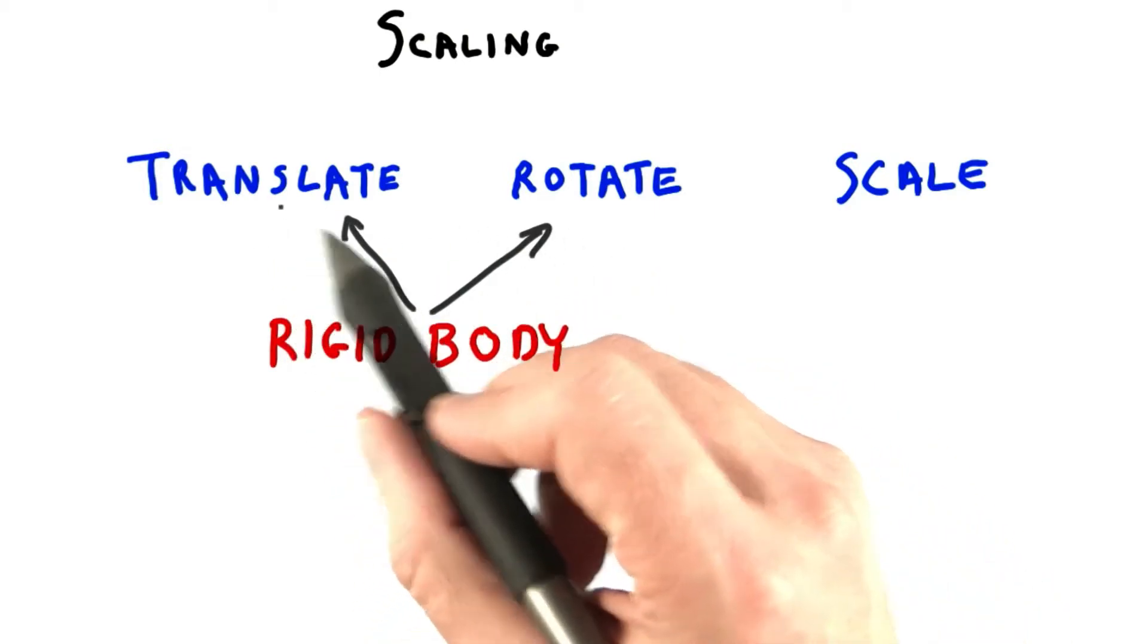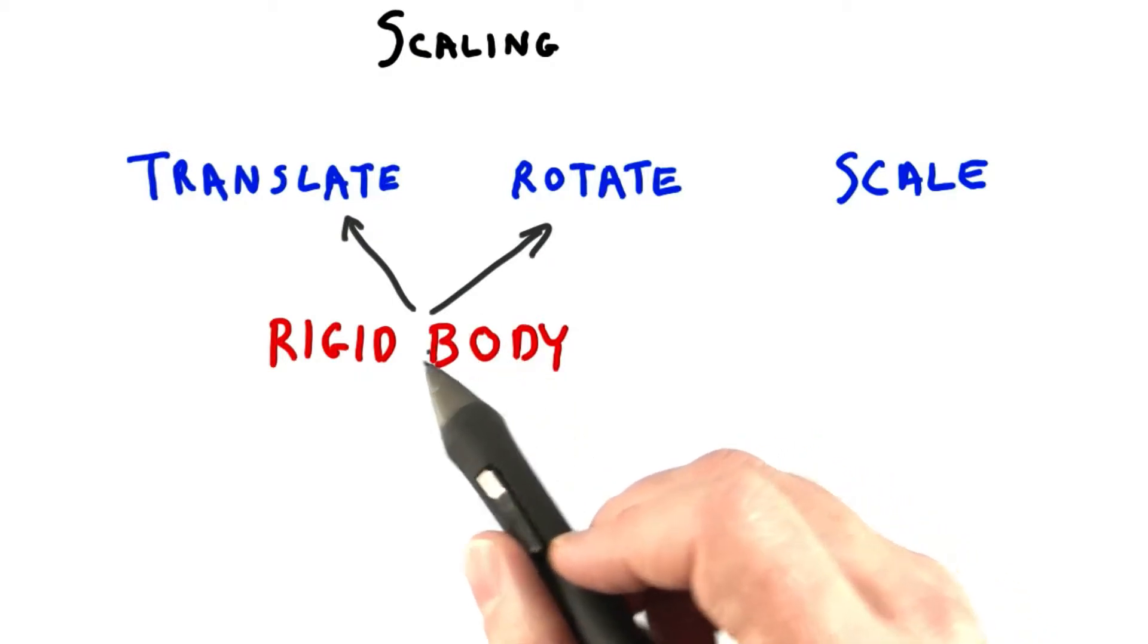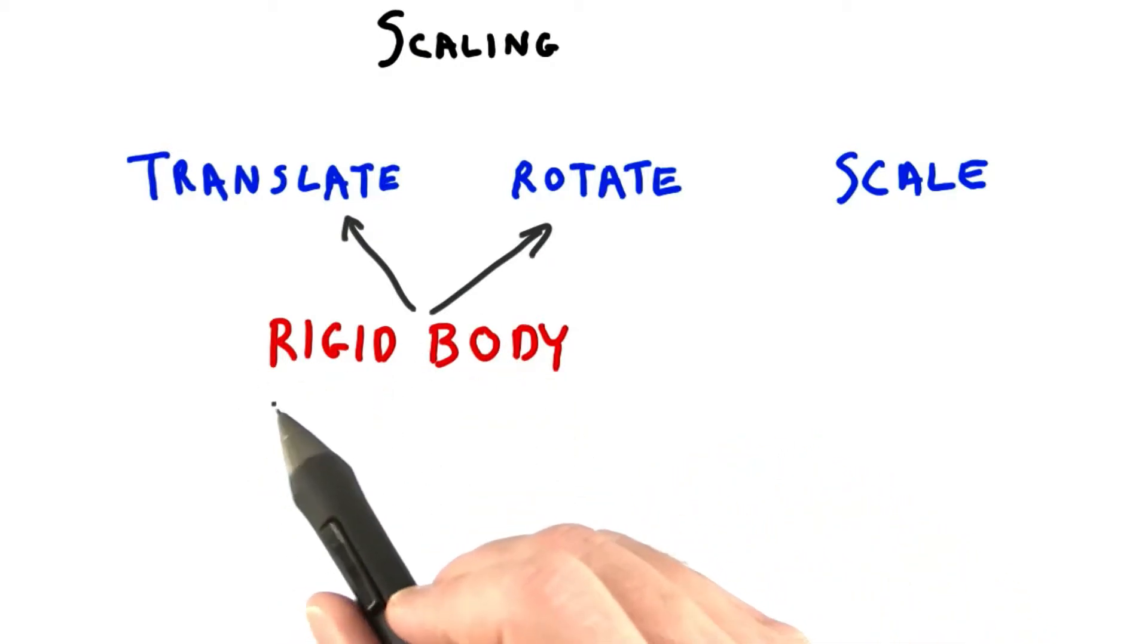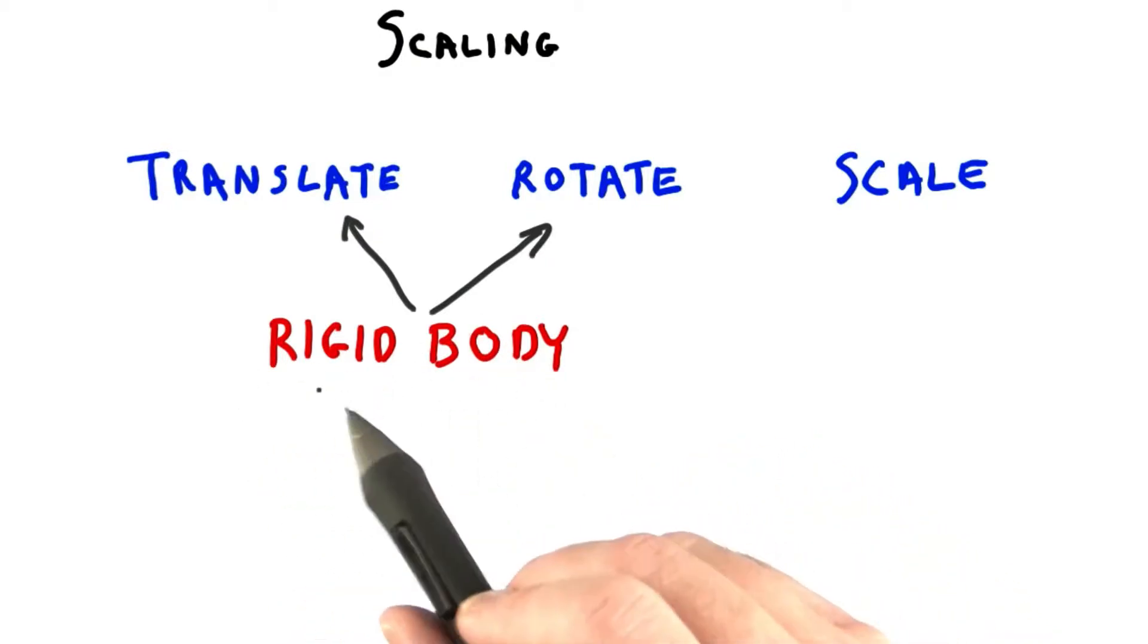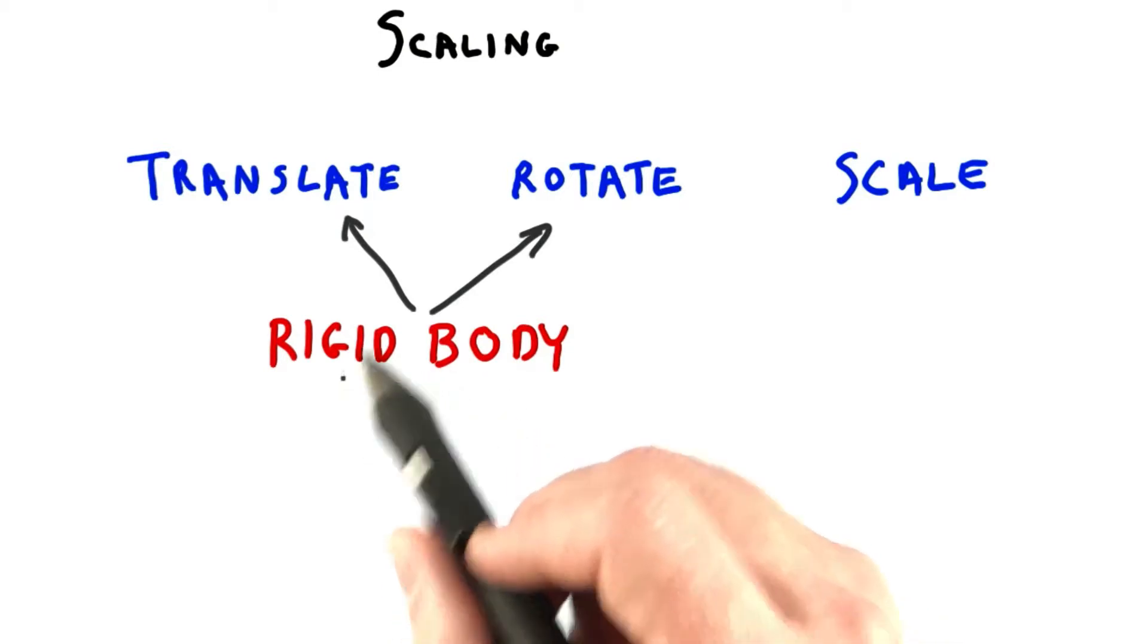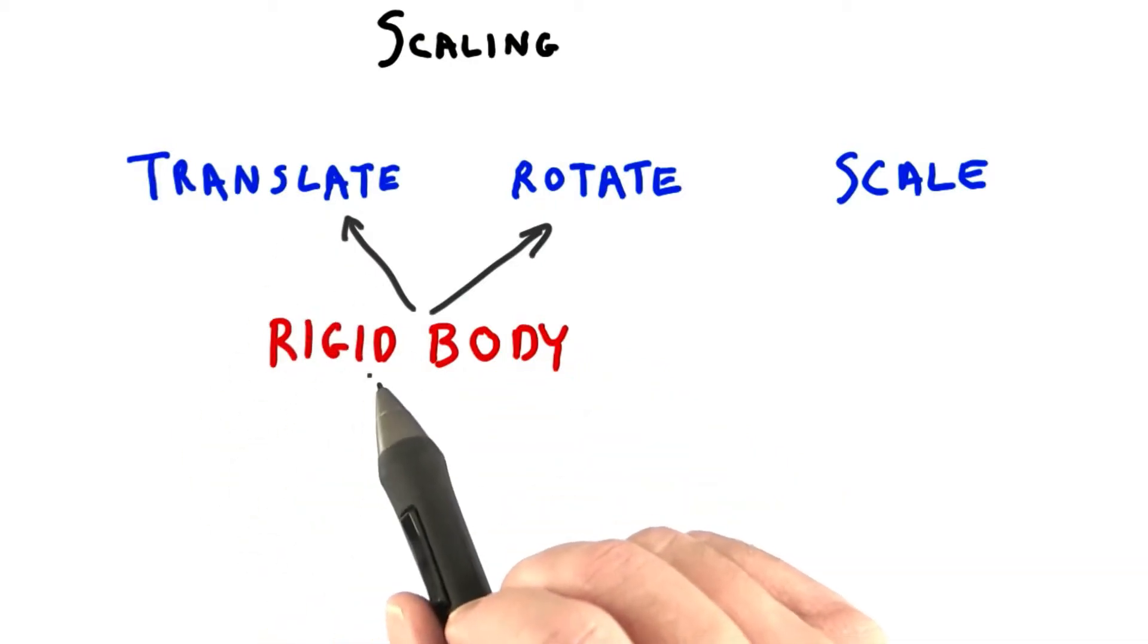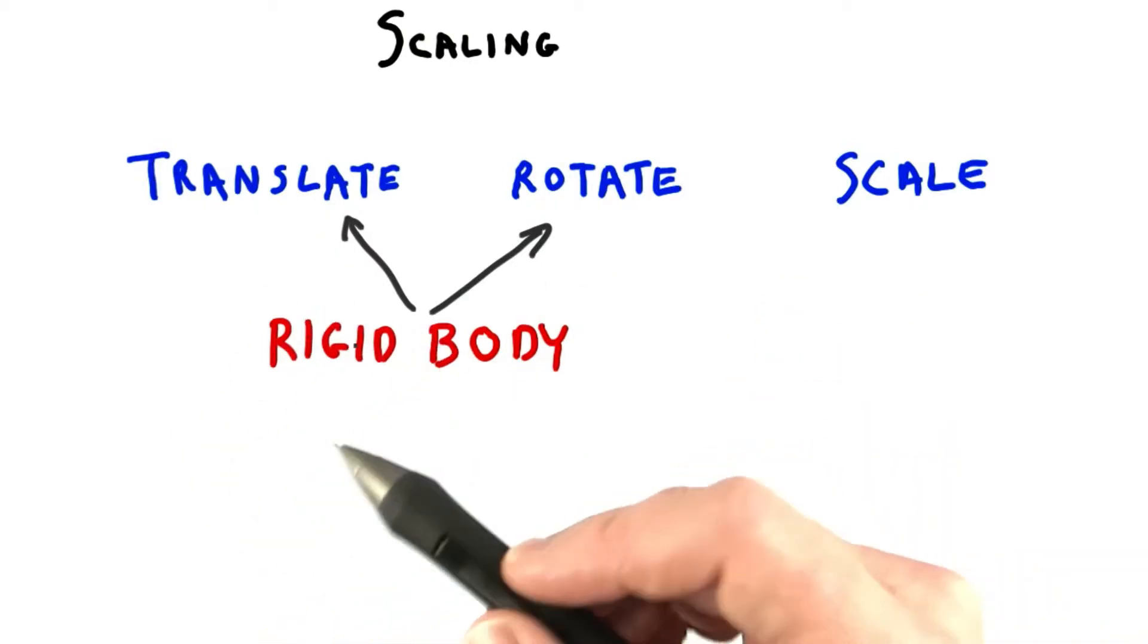When we translate or rotate an object, we don't change its shape or its volume. These two operations are what are called rigid body transforms. The name rigid body is just what it says. If you have an object and apply any number of rotations and translations to it, you won't change its shape. It's as if the object is made out of something rigid and will keep its form.